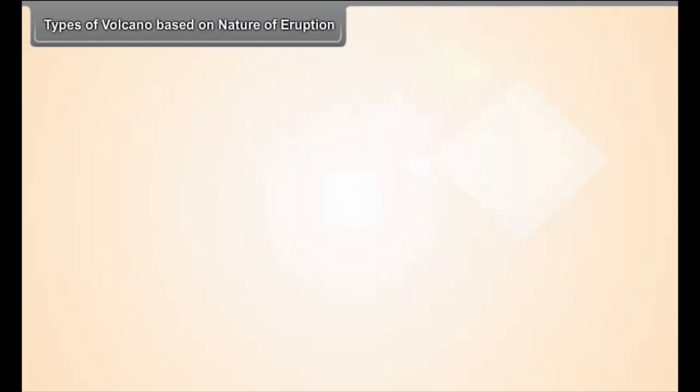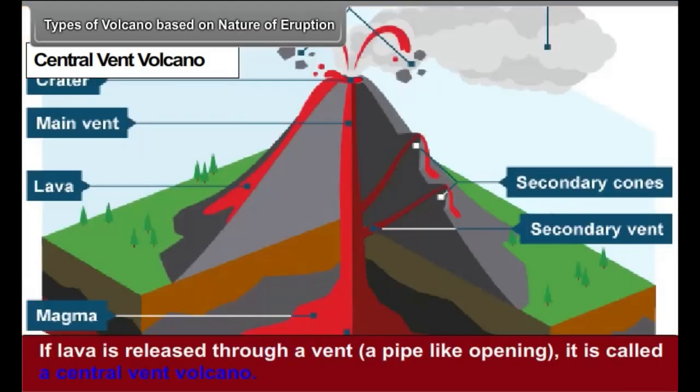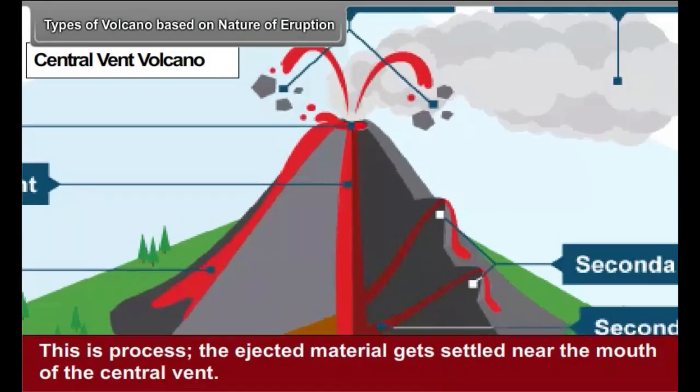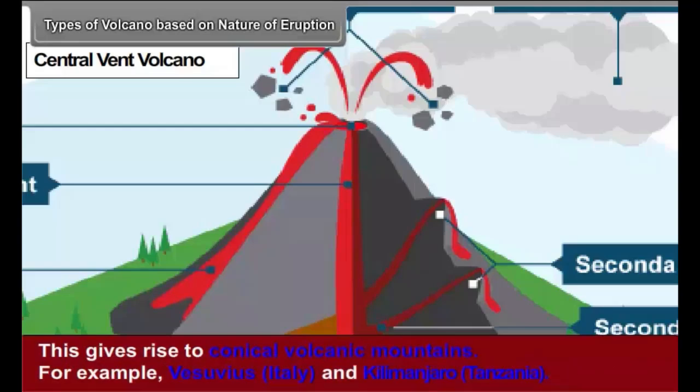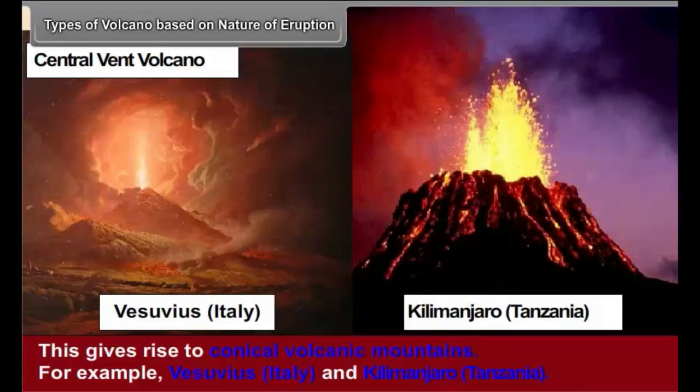Types of volcanoes based on nature of eruption. Central vent volcano. If lava is released through a vent, a pipe-like opening, it is called a central vent volcano. In this process, the ejected material gets settled near the mouth of the central vent. This gives rise to conical volcanic mountains, for example, Vesuvius, Italy, and Kilimanjaro, Tanzania.